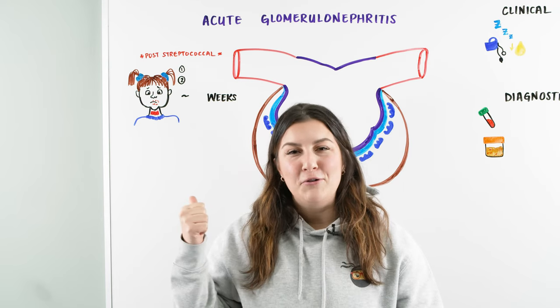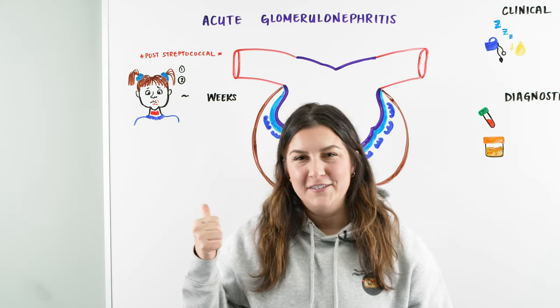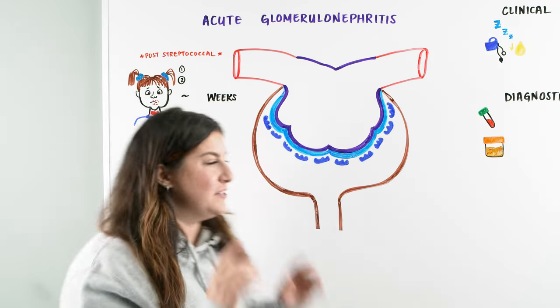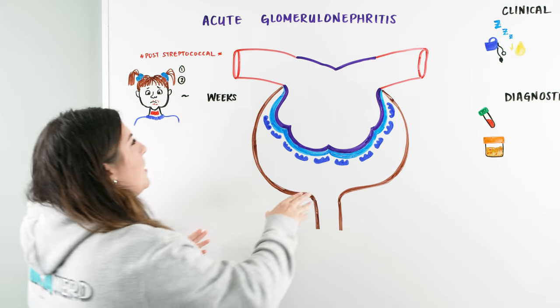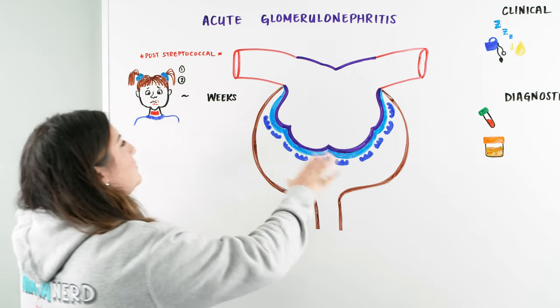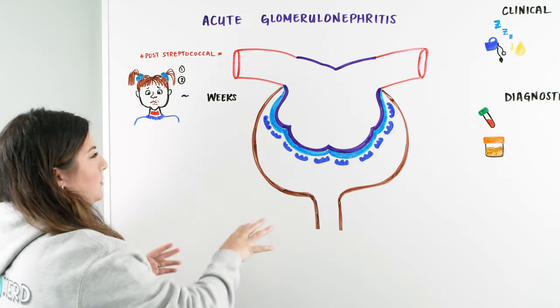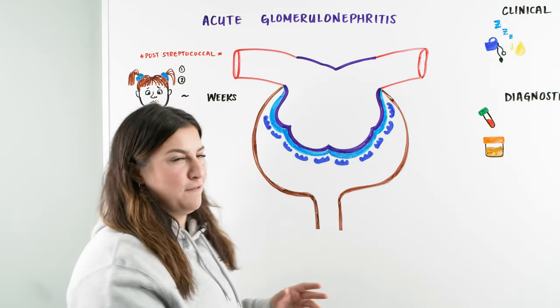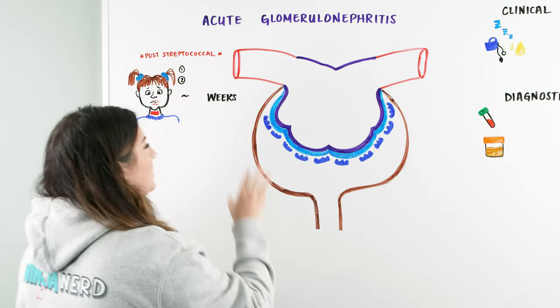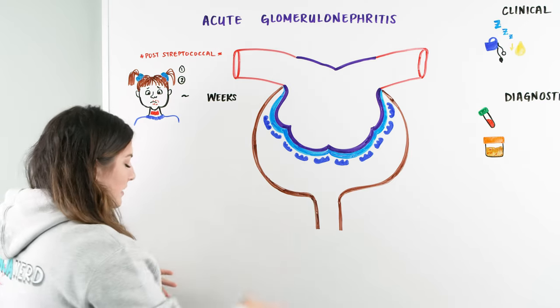Let's get started with acute glomerulonephritis. When we talk about acute glomerulonephritis, we're focusing into what portion — we're still looking into this nephron, we're still looking at this glomerulus.